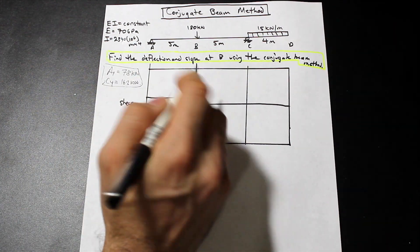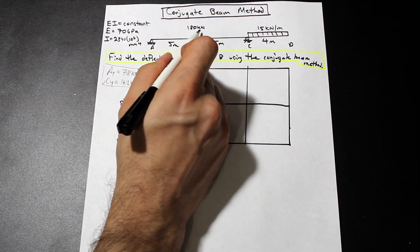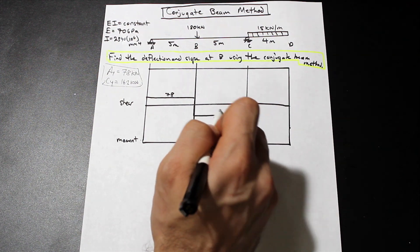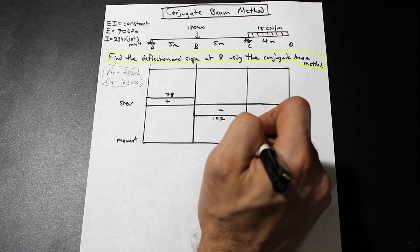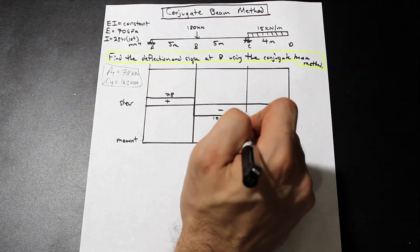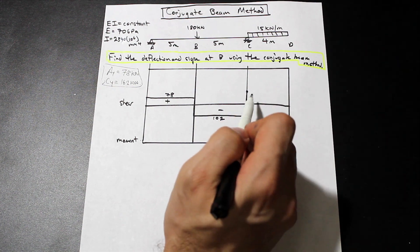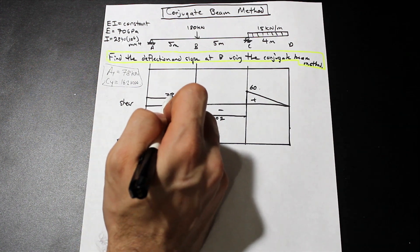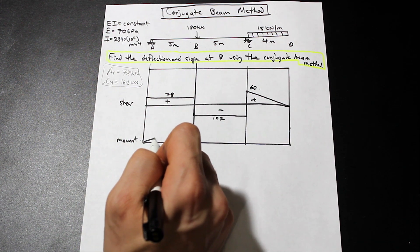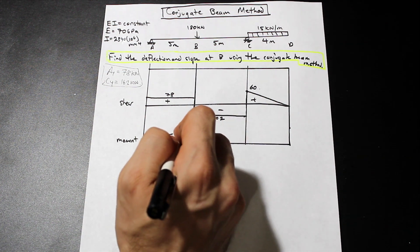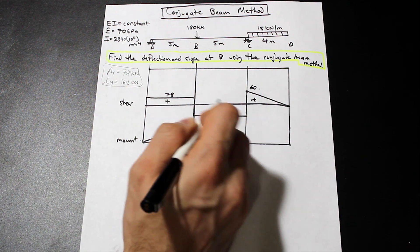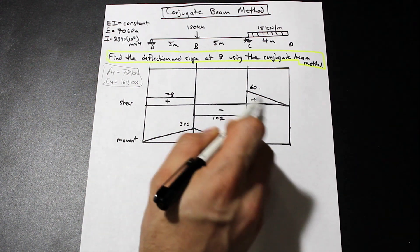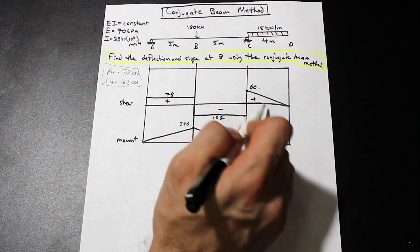We're going to go up 78, then down 180 which gives us 102, and then back up 162 — which is Cy — to 60, and then down to zero. If we multiply 78 by 5 we get 390, then subtract 102 times 5, which gives us negative 120, so we come all the way down here.